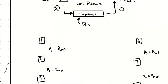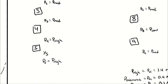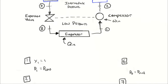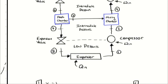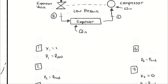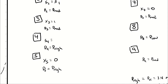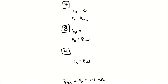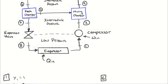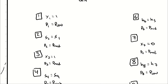With those pressures in place, I have nine of my required independent intensive properties and I need nine more. Two come from the fact that I was told the quality at the outlet of the evaporator and the outlet of the condenser. Two more come from the fact that the compressors are isentropic, meaning S4 equals S9 and S2 equals S1. Two come from the expansion valves operating isenthalpically, meaning H6 equals H5 and H8 equals H7. Two come from the flash chamber separating by phase — state 7 is saturated liquid and state 3 is saturated vapor. The last one comes from an energy balance on the mixing chamber, from which I can calculate the enthalpy at state 9.